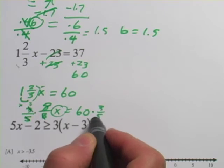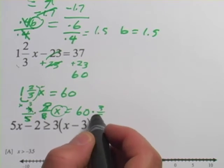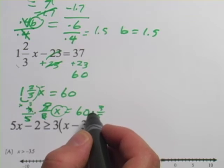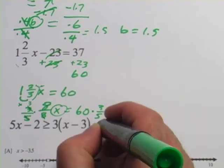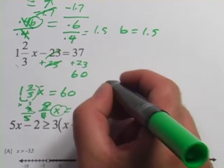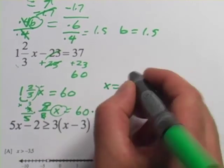And now we have 60 times 3 fifths. So the way I would do this on my calculator would be 60 times 3 divided by 5. And we get 36. So x equals 36.